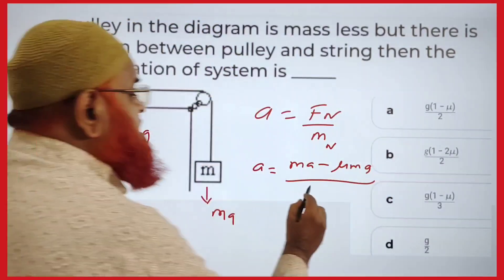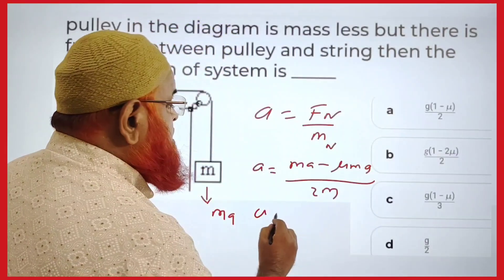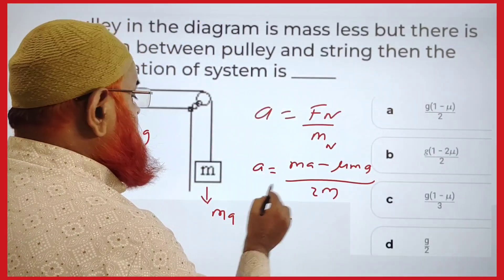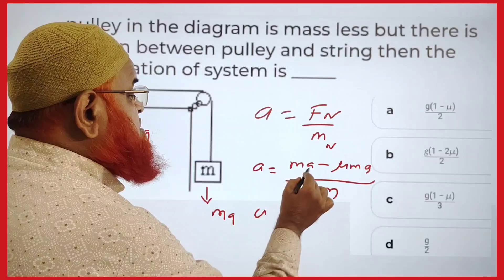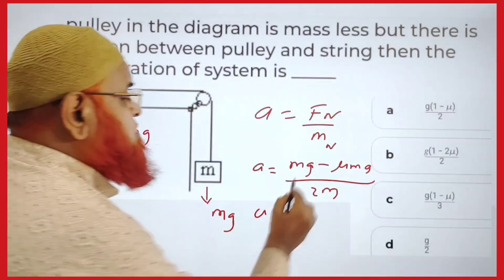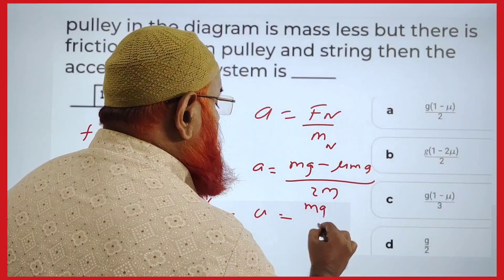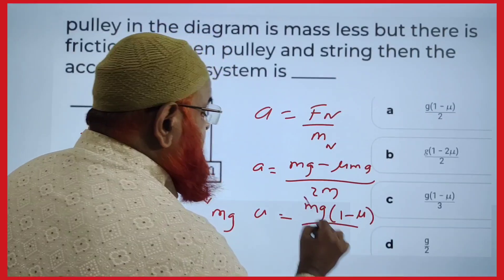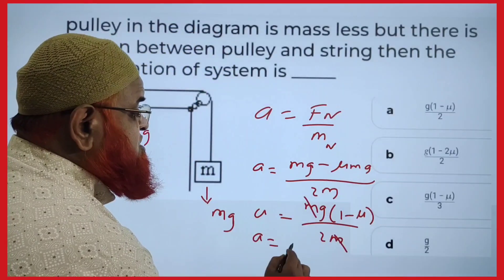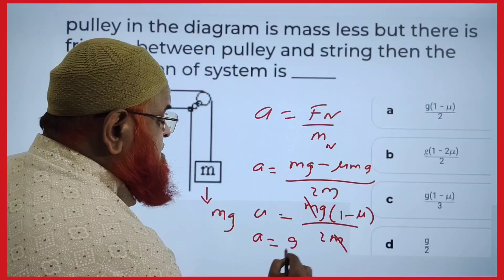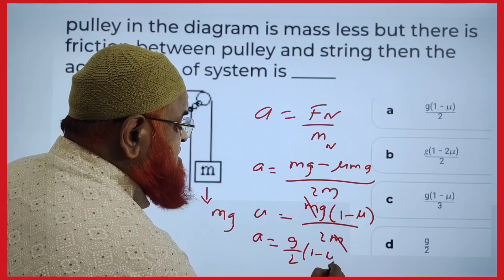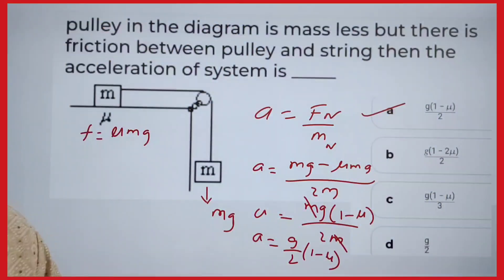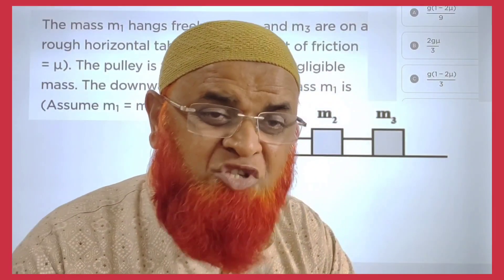Net mass means this mass plus this mass, which is 2m. So acceleration equals mg minus μmg divided by 2m. If you factor out mg, you get g/2 into (1 minus μ). So the answer is g(1-μ)/2, which is the first option. This is a previous year question related to friction.